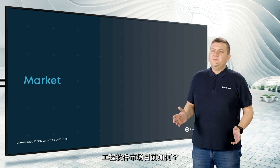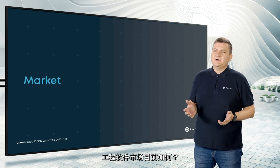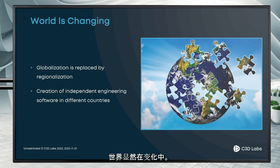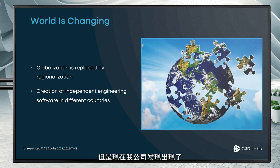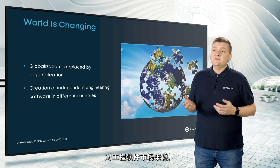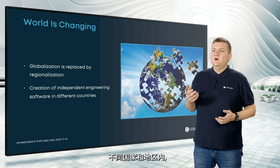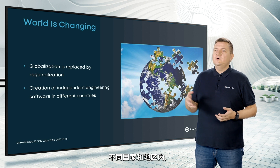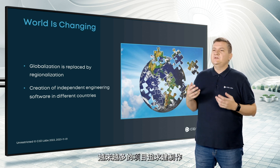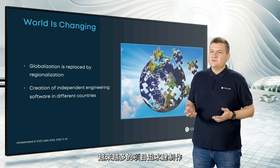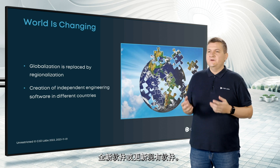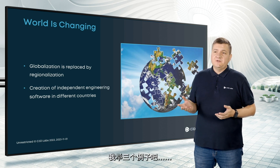What has happened with the engineering software market? We see that the world is changing. We started to work in the market in the era of globalization, but now we see a trend toward regionalization. In the engineering software market, we can see more and more projects to create new or update existing software in very different countries. Just three examples.